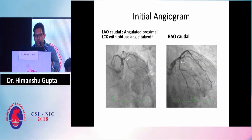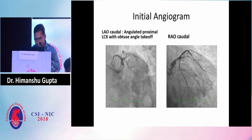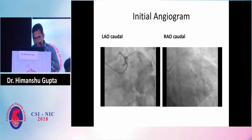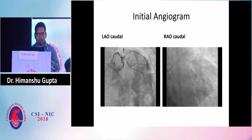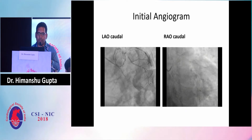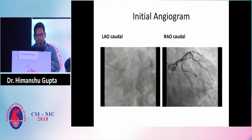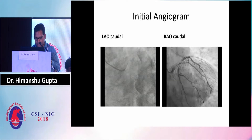This was the initial angiogram with the allo-caudal view showing an angulated proximal LCX with obtuse angle takeoff, and the same lesion can be seen in the aero-caudal view also. The allo-caudal view showed the angulated takeoff of the LCX with stenosis in the proximal LCX, and the aero-caudal view also demonstrated the proximal LCX stenosis.